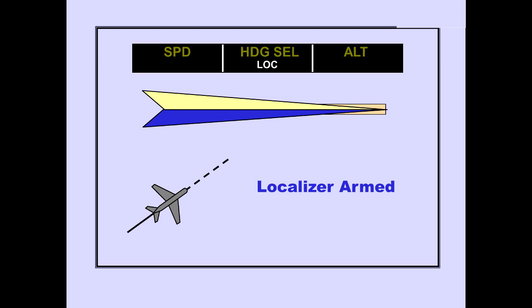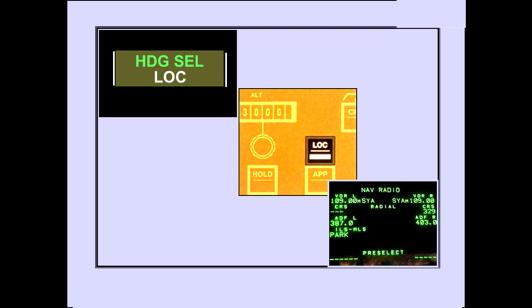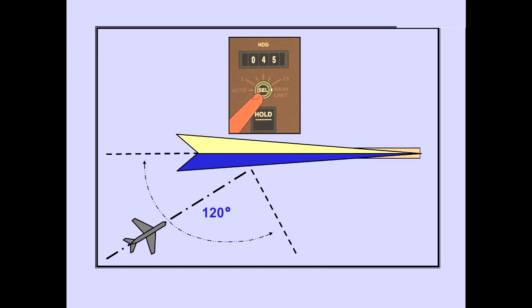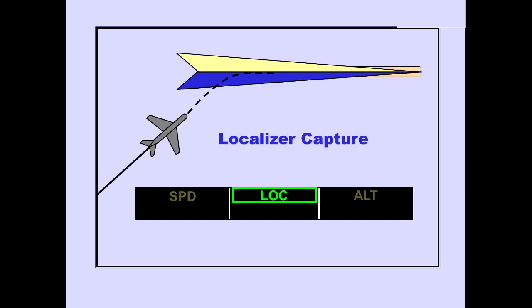Navigation radio tuning is discussed in the navigation radio module. Localizer is displayed on the PFD, and the autopilot is armed to capture the localizer. Heading Select or Heading Hold mode can be used to intercept the localizer. In this example, we'll use Heading Select mode. Localizer capture cannot occur if the intercept angle exceeds 120 degrees. The localizer capture point is variable and depends on intercept angle and closure rate. At localizer capture, the localizer mode is engaged and the autopilot turns the airplane to track the localizer. This mode change is shown in green on the PFDs.